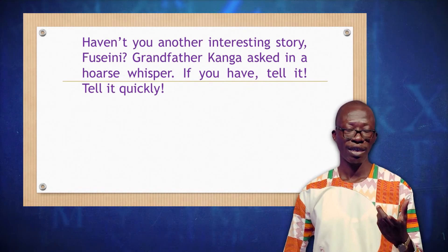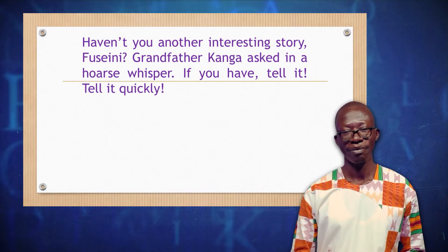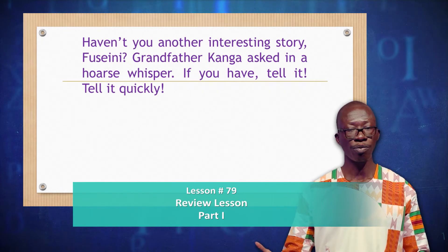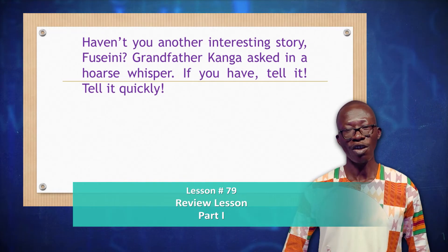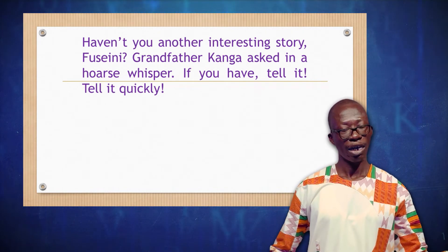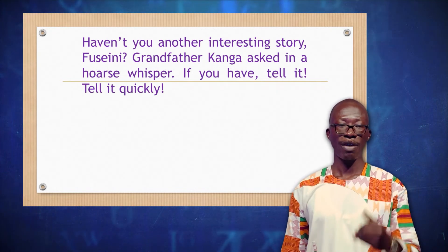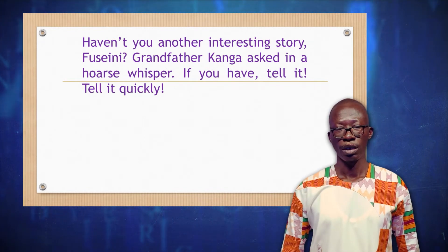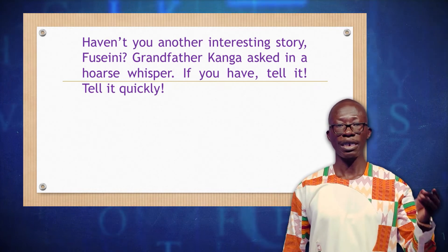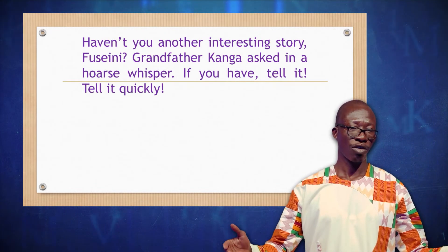Now let's classify these sentences as whether they are simple sentences, compound sentences, or complex sentences. A simple sentence is made of only one clause, and a clause has a subject-verb relationship. So let's see in the first sentence how many clauses we have. If we have only one clause, then it's a simple sentence. If we have more than one clause, then it's either a compound sentence or a complex sentence, depending on the kind of clauses. In the first sentence, we have just one clause — the subject being 'you,' here referring to Fuseni, and our verb is 'haven't.' So we have just one independent clause — it's a simple sentence.